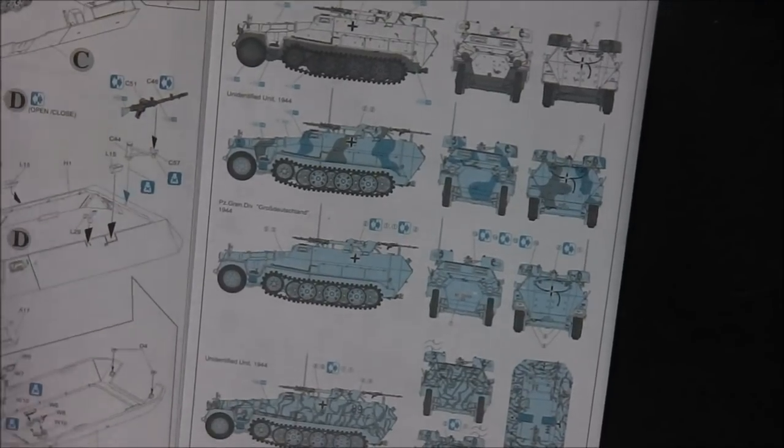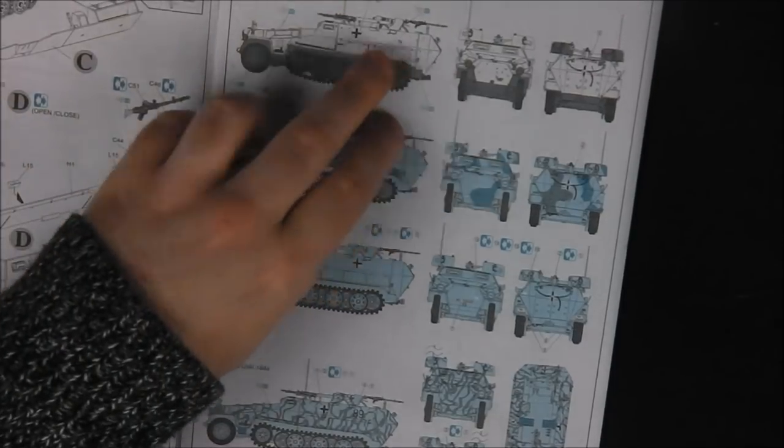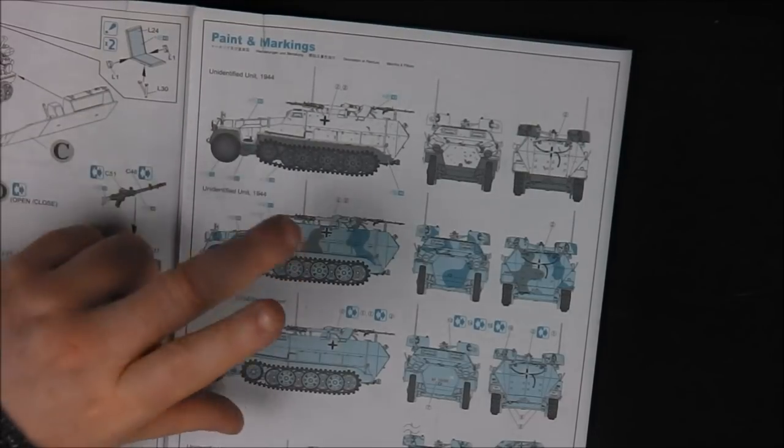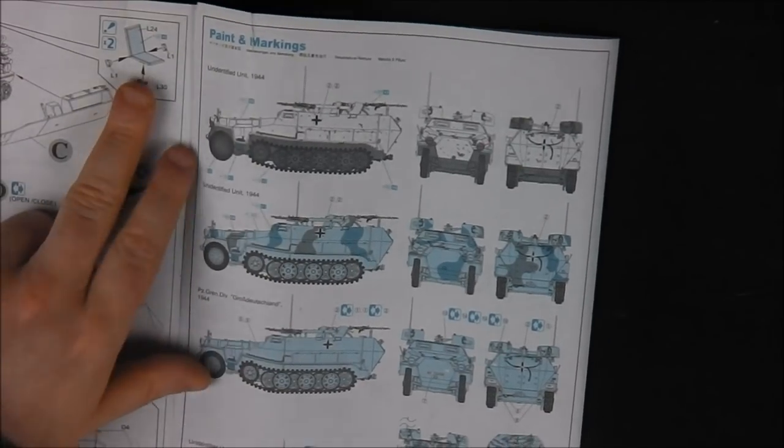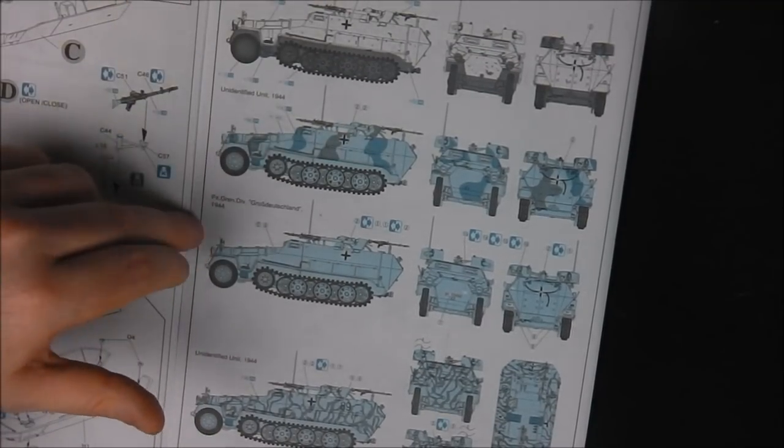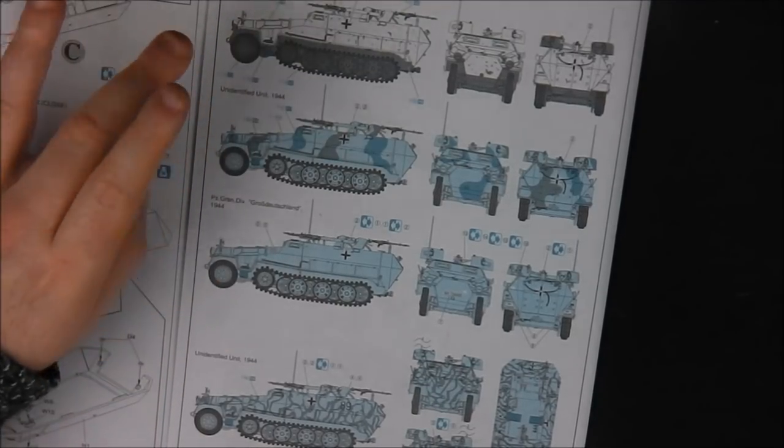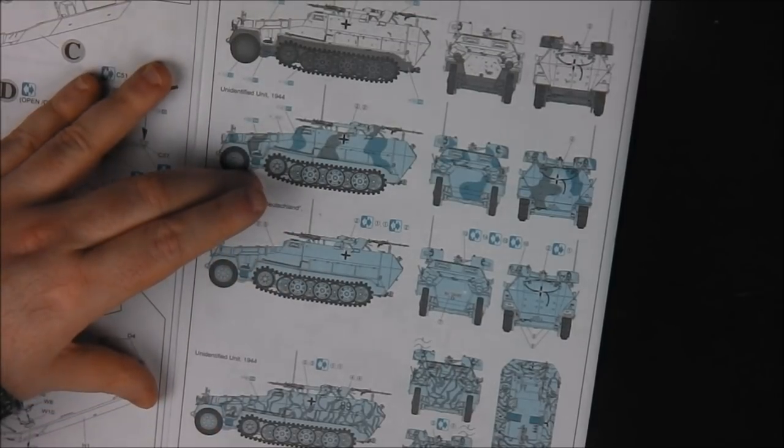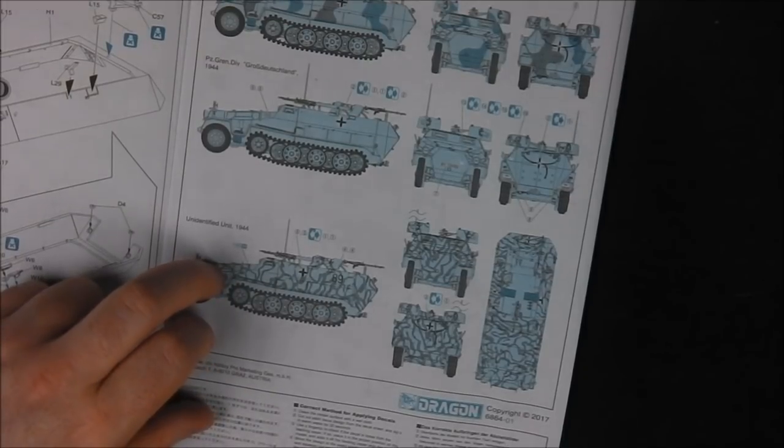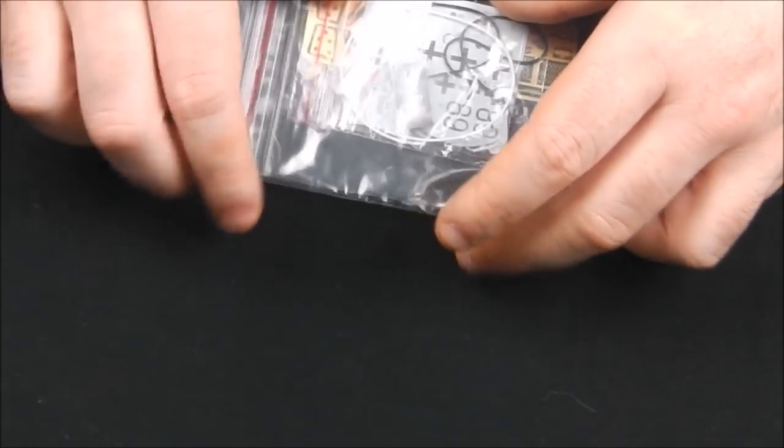Then we move on to our markings. We have three markings. We have, of course, the Dragon unidentified unit, 1944 whitewash vehicle. That's quite nice. Again, another unidentified unit, 1944 with our tri-tone camo. We have the only identified vehicle in this entire kit, and that is the Panzer-Grenadier-Division Großdeutschland, 1944. This will say what theater operations, probably on the Eastern Front. Then we have, again, unidentified unit, 1944, with some kind of cool kind of octopus camo.